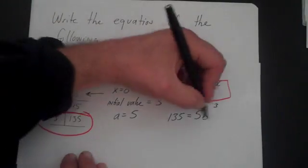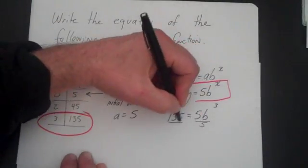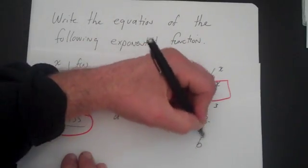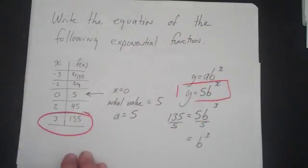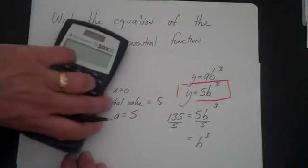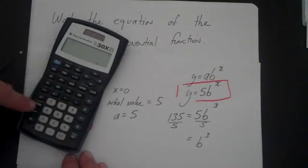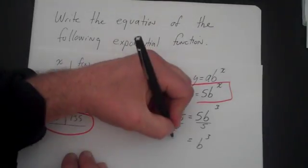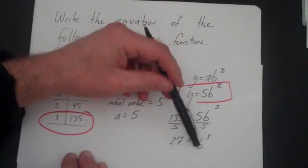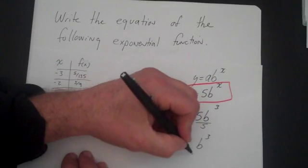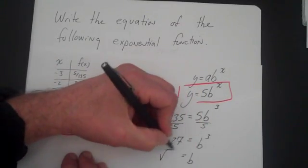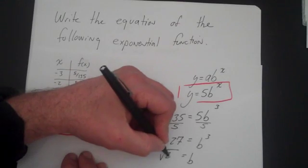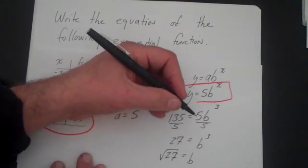Now let's solve for b. Let's divide both sides by 5, and we have b cubed is equal to... 135 divided by 5 is equal to 27. So now I need the opposite of a cube. The opposite of a cube is a cube root. So b is equal to the cube root of 27, which is simply 3.